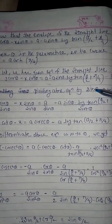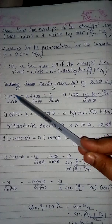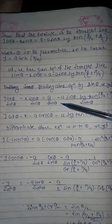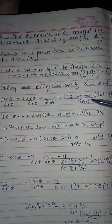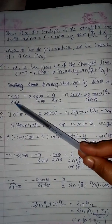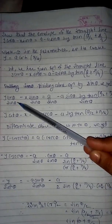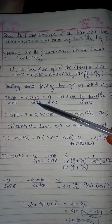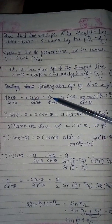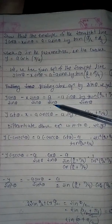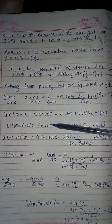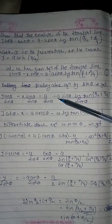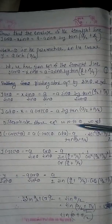Dividing the whole equation by sin θ: y·cos θ/sin θ − x = a/sin θ − a·sin θ · log(tan(θ/2 + π/4)) / sin θ. We know that cos θ/sin θ = cot θ, and 1/sin θ = cosec θ, so this simplifies to: y·cot θ − x = a·cosec θ − a·log(tan(θ/2 + π/4)).